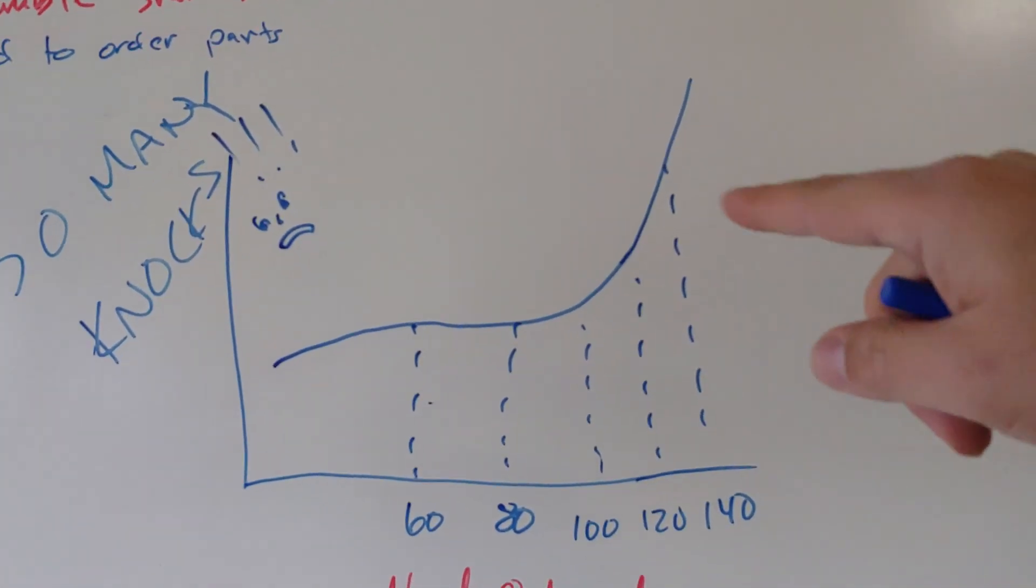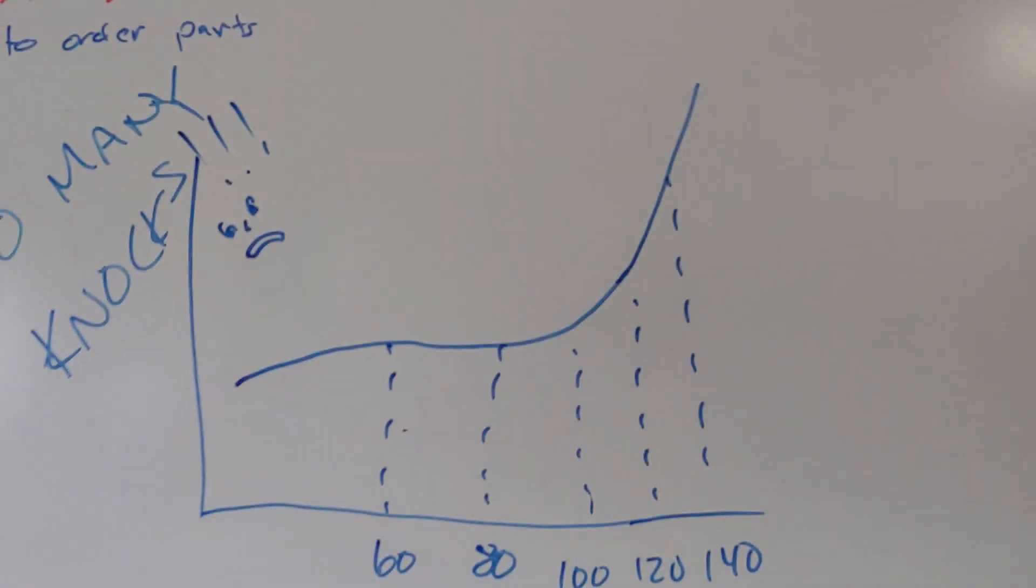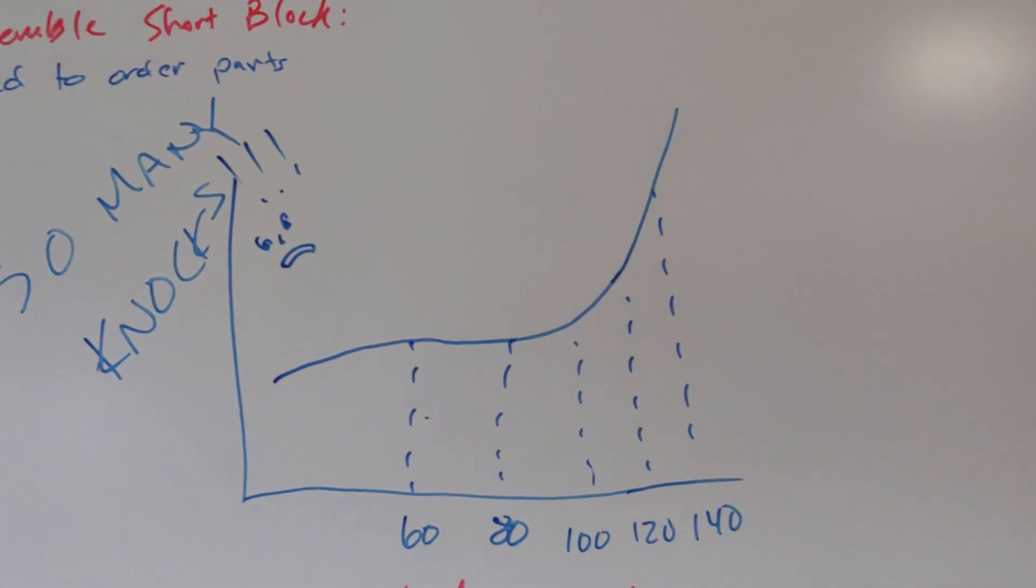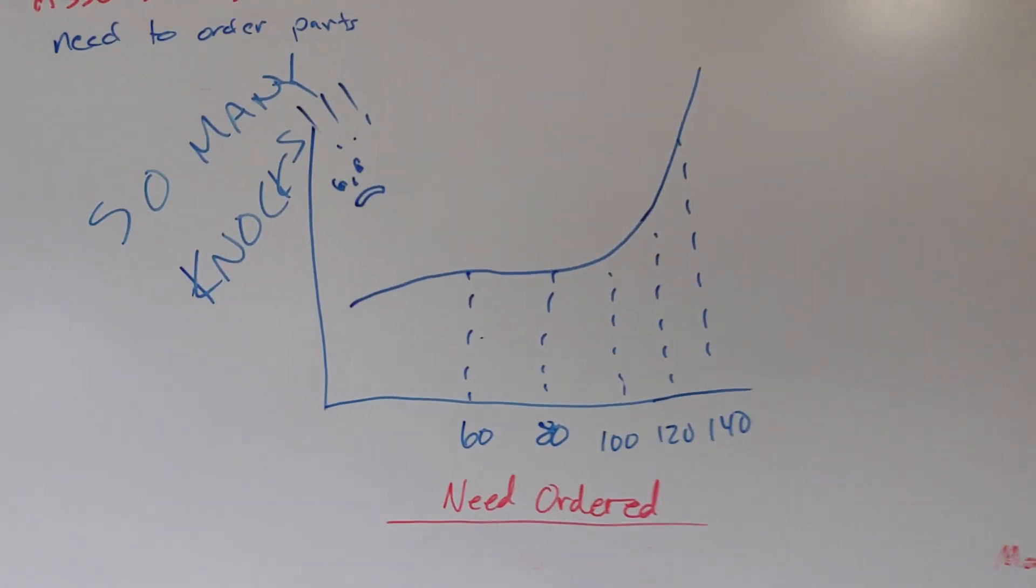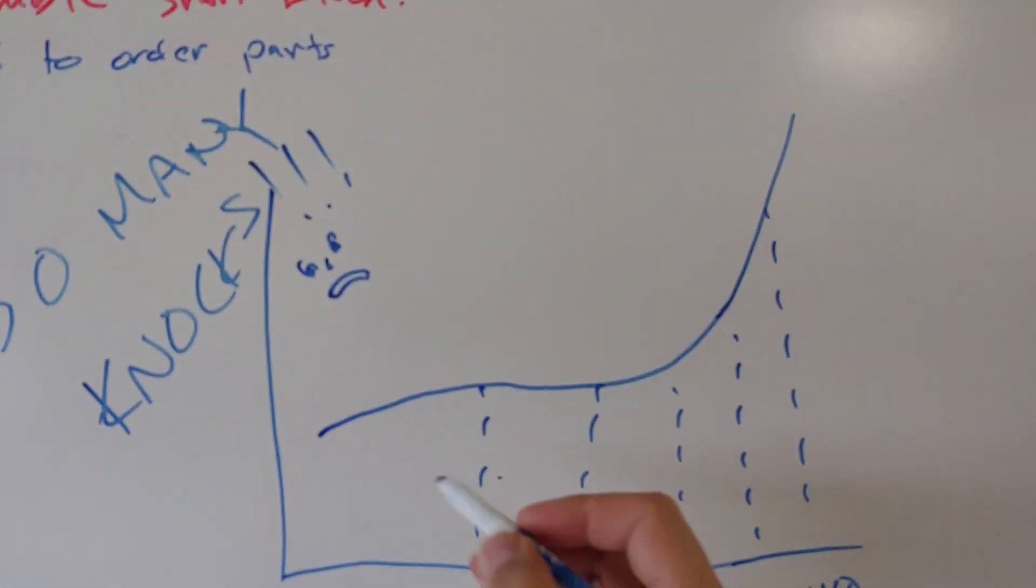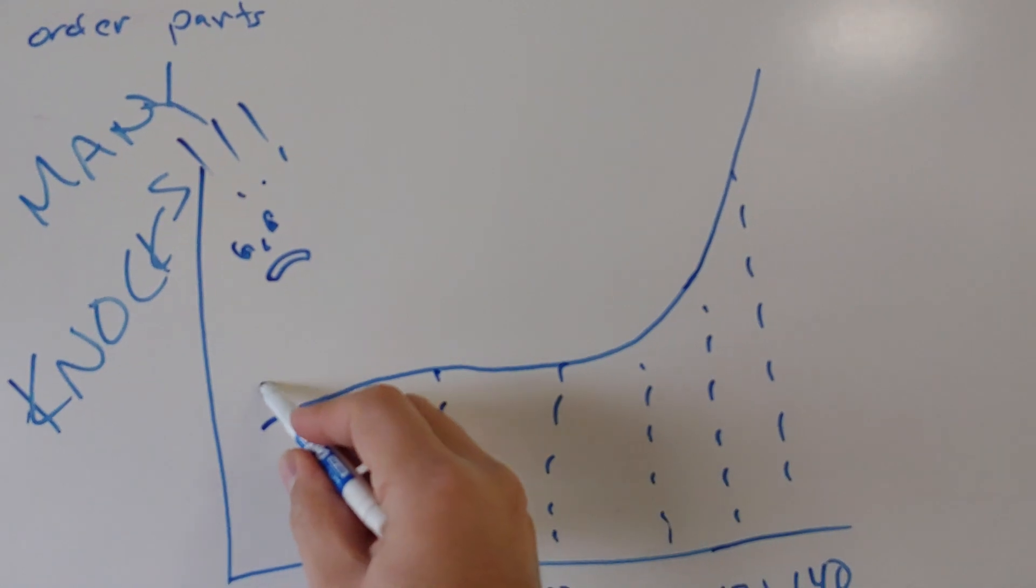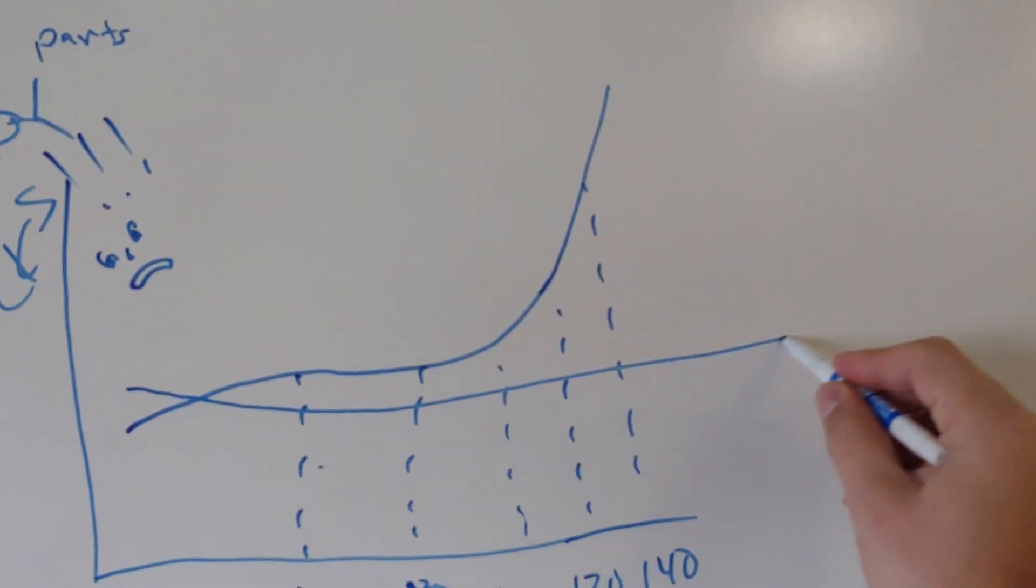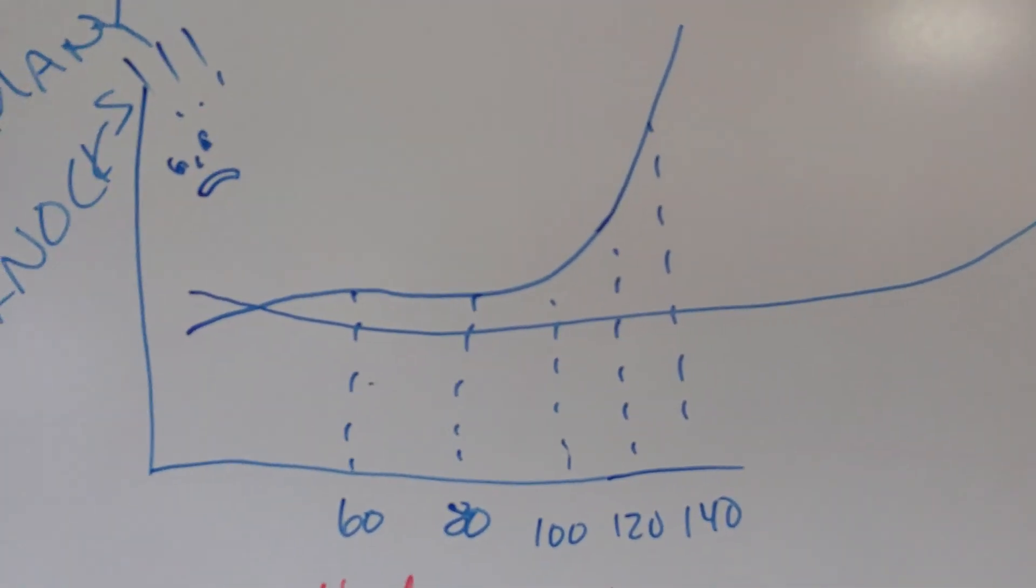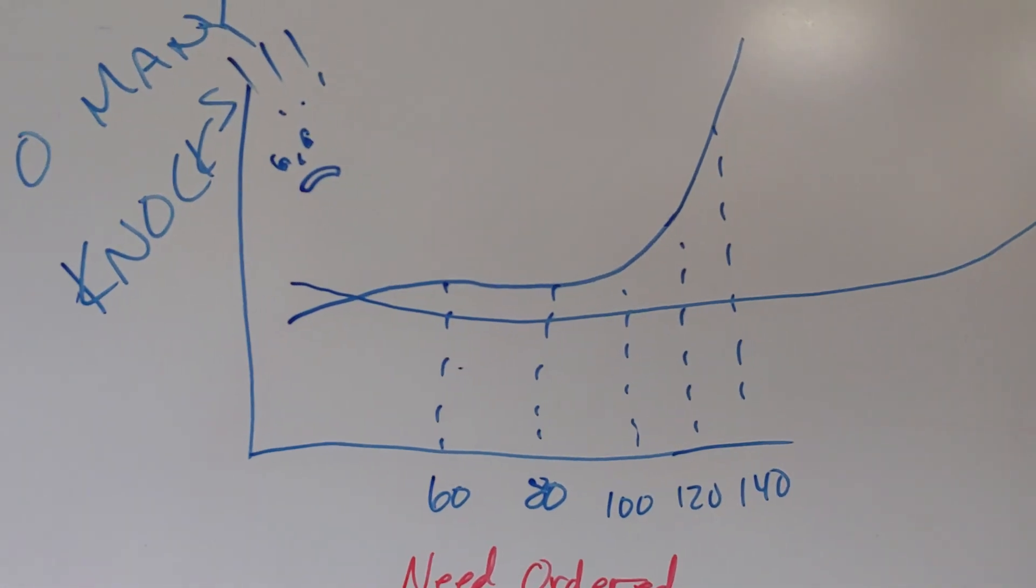They had huge increases in detonation on these engines as intake air temp increases. That was pump gas. But with ethanol, it was pretty cool. Ethanol was extremely stable and wasn't nearly as affected by intake air temp.